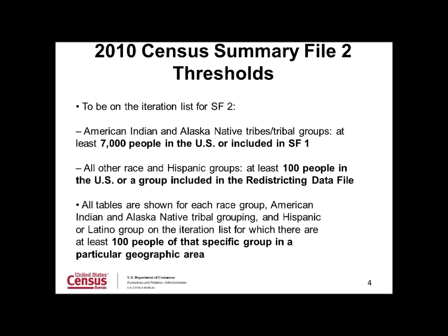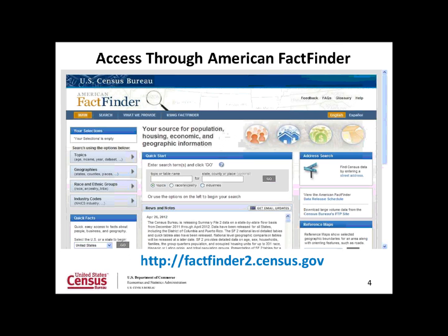Two types of thresholds were used to determine inclusion in the Summary File 2 product. For AIAN groups, a national count of 7,000 or being included in Summary File 1 was needed. For all other race and Hispanic groups, at least a 100-person count at the national level was required, or being included in the redistricting data file. Also, all groups had to have at least 100 people at any given level of geography for that data to be published.